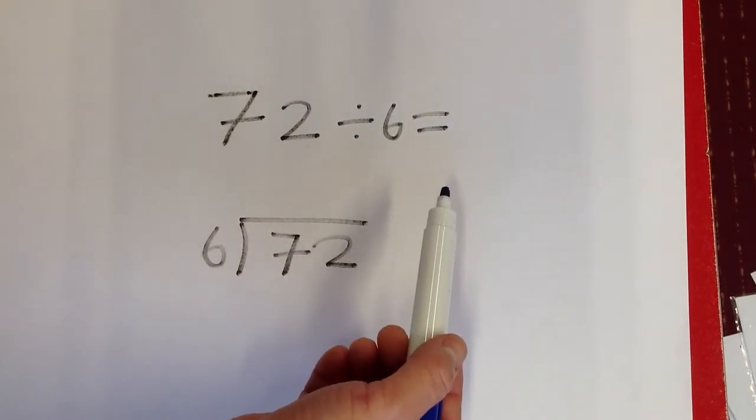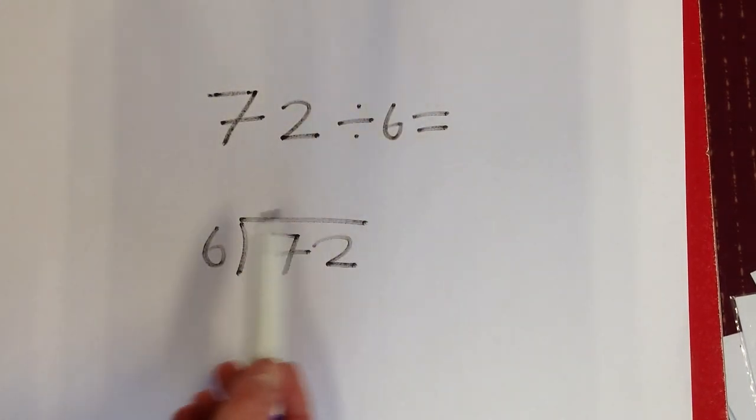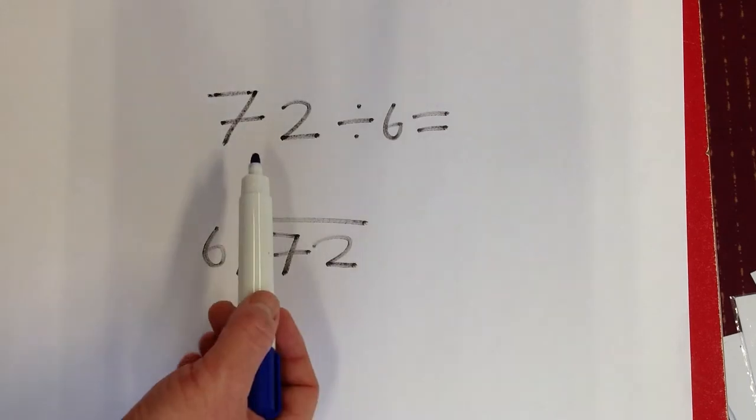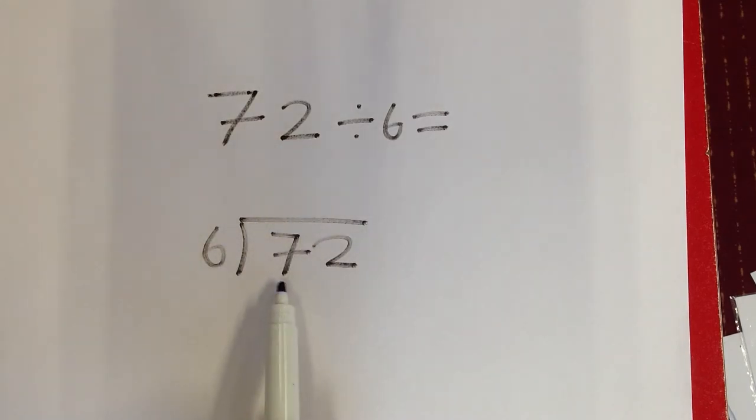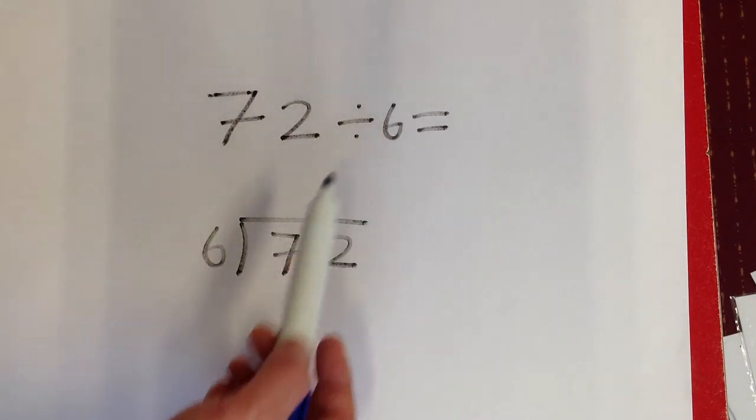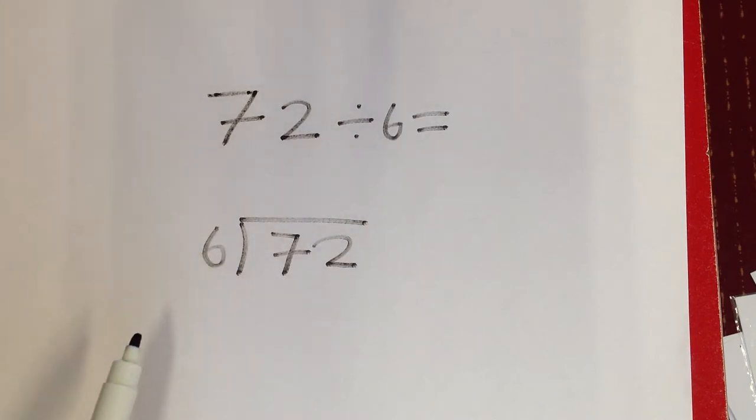72 divided by 6. To solve this, I'm going to put it into the bus stop method. The biggest number goes under the bus stop, and the smallest number goes outside the bus stop.